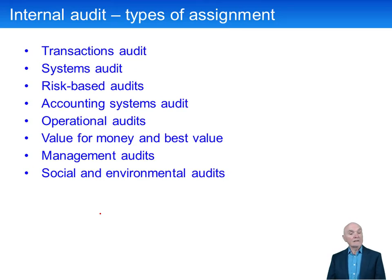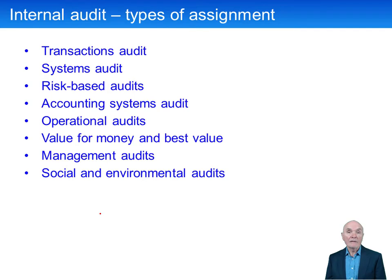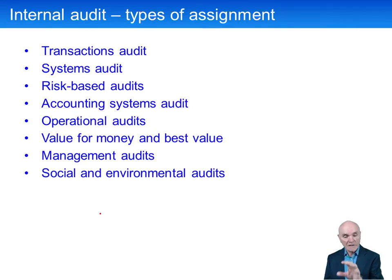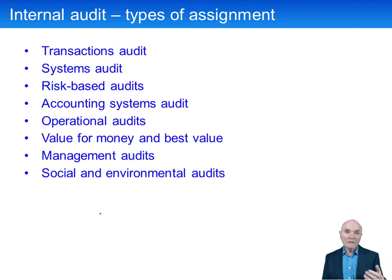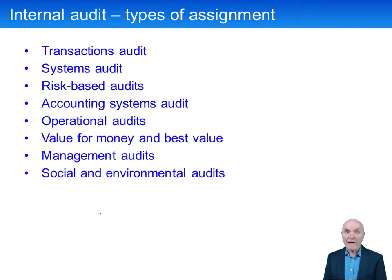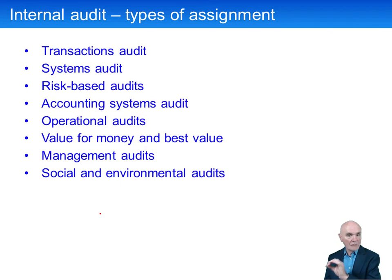Types of audits they can get involved with: transactions audit — tracing through, for example, a purchase transaction from the placing of the order, to receipt of goods, to the checking of the goods, to raising the goods received note, waiting for the invoice, matching the invoice to the goods received note and order, posting the invoice to the payables ledger, and eventually paying off that invoice. We need to make sure that the transactions are happening properly and logically.